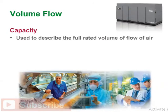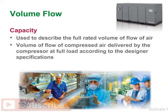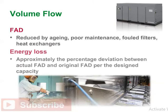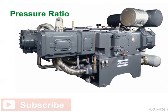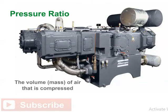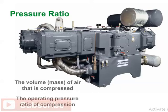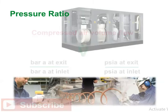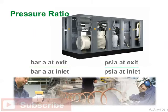Capacity is a term used to describe the full-rated volume of flow of air — specifically, the volume of flow of compressed air delivered by the compressor at full load according to the designer specifications. FAD is reduced by aging, poor maintenance, fouled filters, and heat exchangers. Energy loss is approximately the percentage deviation between actual FAD and original FAD per the designed capacity. The cost of operating a compressor at full load is proportional primarily to the volume of air compressed and the operating pressure ratio, given by bar A at exit divided by bar A at inlet.